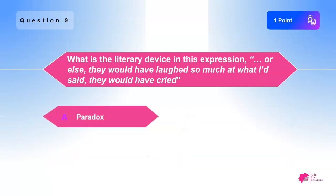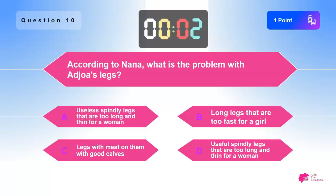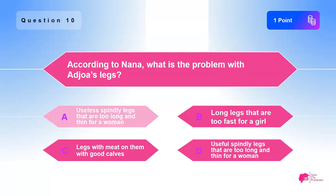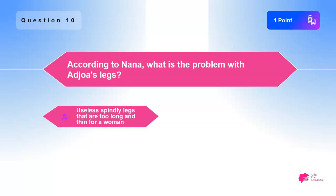The answer is A) Paradox. Question ten: According to Nana, what is the problem with Ajwa's legs? A) Useless spindly legs that are too long and thin for a woman, B) Long legs that are too fast for a girl, C) Legs with meat on them with good calves, D) Useful spindly legs that are too long and thin for a woman. The answer is A) Useless spindly legs that are too long and thin for a woman.